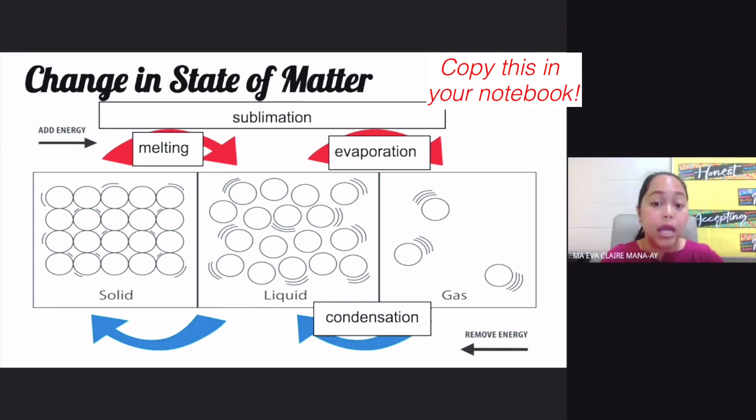This is how rain is formed. Rain, other types of precipitation. Now, liquid to solid, you'd call this freezing. Liquid to solid is called freezing.